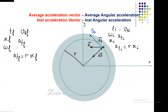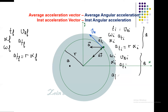For the second point B: initially it shares the same omega and the same alpha as A, but has v_B initial and a_tangential_B initial. So a_tangential_B initial equals r_B times alpha_initial. We have the same alpha but not the same r, so we don't have the same a_tangential.